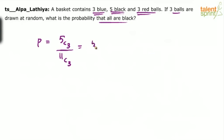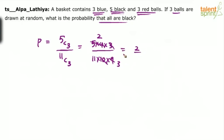Simplify this now. So 5 × 4 × 3 upon 11 × 10 × 9, because the 3 × 2 × 1 denominators will get cancelled. This gives 20 over — 10 goes 2 times, 3 goes 3 times. So the answer is 2 by 33.